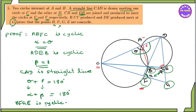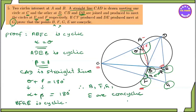BFGE is cyclic. You can use BFGE — therefore BFGE is the most important cyclic quadrilateral in this proof.